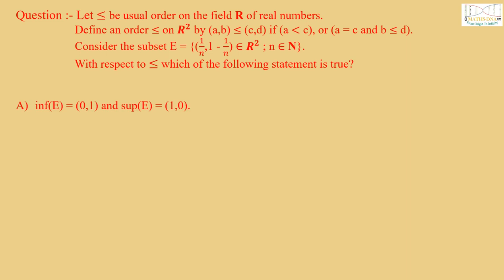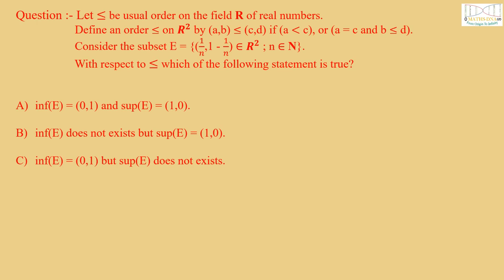Option A: Infimum of E is (0,1) and Supremum of E is (1,0). Option B: Infimum of E does not exist but Supremum of E is (1,0). Option C: Infimum of E is (0,1) but Supremum of E does not exist. Option D: Both Infimum and Supremum do not exist.